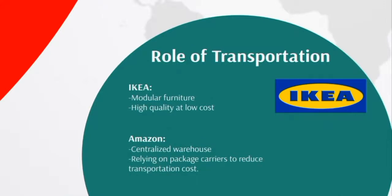The role of transportation is even more significant in global supply chains. Different types of companies follow different transportation strategies or networks to minimize transportation cost. For example, IKEA is a renowned furniture brand that provides high quality modular furniture at low cost. The modular design of its furniture allows IKEA to transport its goods all over the world much more cost effectively than a customized furniture manufacturer.